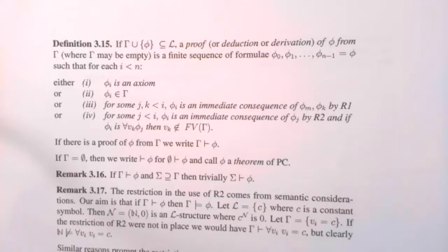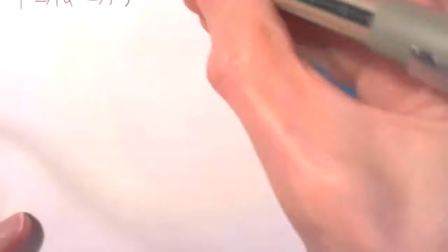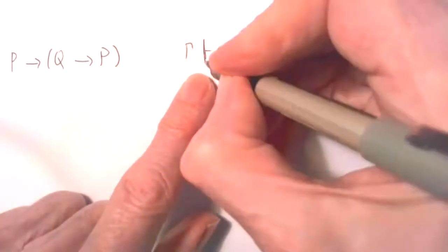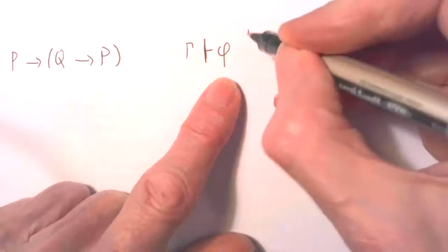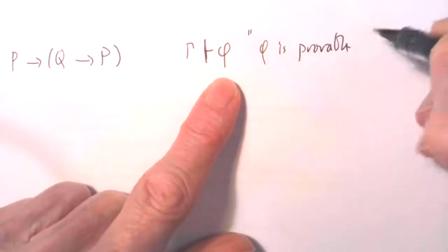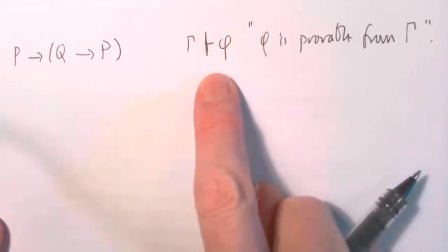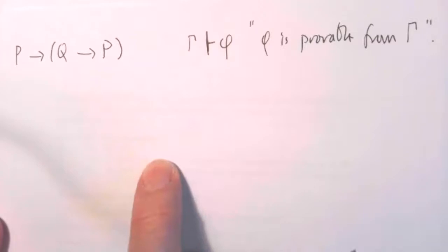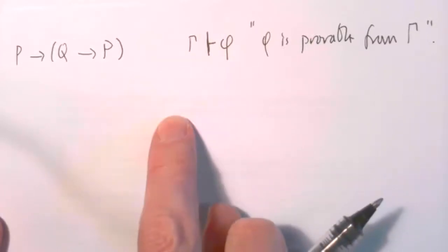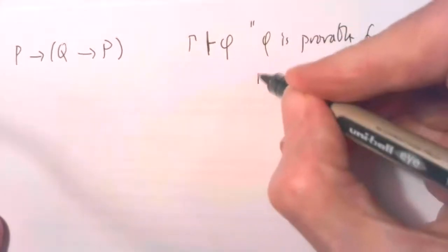Remark 3.15 on the next page says what a proof is going to be. There's a single turnstile here. The idea is that phi is provable in PC, predicate calculus, from gamma. We'll say this holds if, just like any mathematical proof, I've got a finite list of lines of the proof that'll end with phi. During the proof I can use any of the axioms which we've just talked about on the previous page, or hypotheses from gamma. Gamma is a set of formulae.